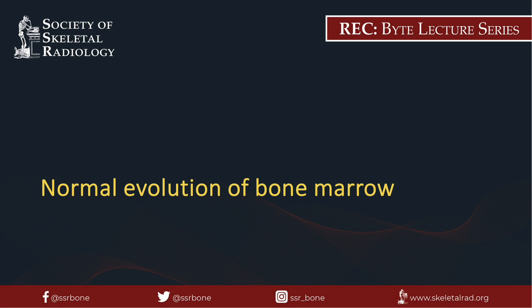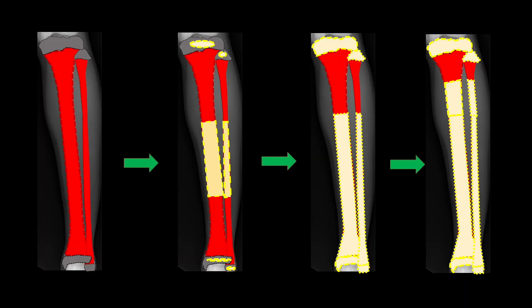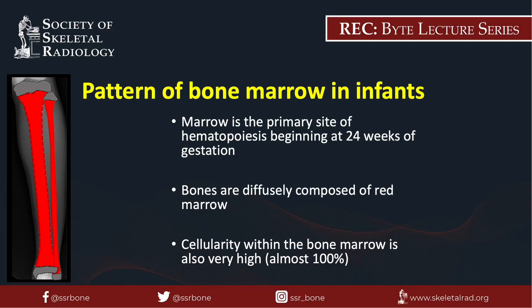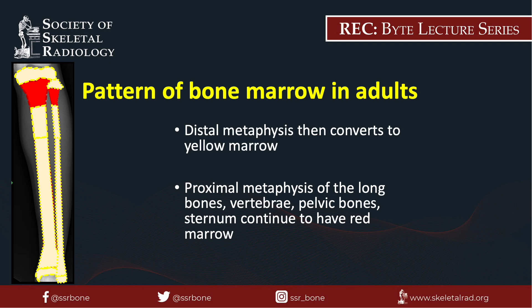The maturation of marrow progresses in a very predictable way. Within long bones, the epiphysis and apophysis will mature to yellow marrow first, followed by the diaphysis, distal metaphysis, and proximal metaphysis. At 24 weeks of gestation, the marrow becomes the primary site of hematopoiesis. At birth, active hematopoiesis is present throughout the entire skeleton. In children, the epiphysis and mid-diaphysis start to convert to yellow marrow. In adults, most of the marrow is yellow marrow with the exception of the proximal metaphysis of long bones, as well as areas of the pelvis, spine, and sternum.